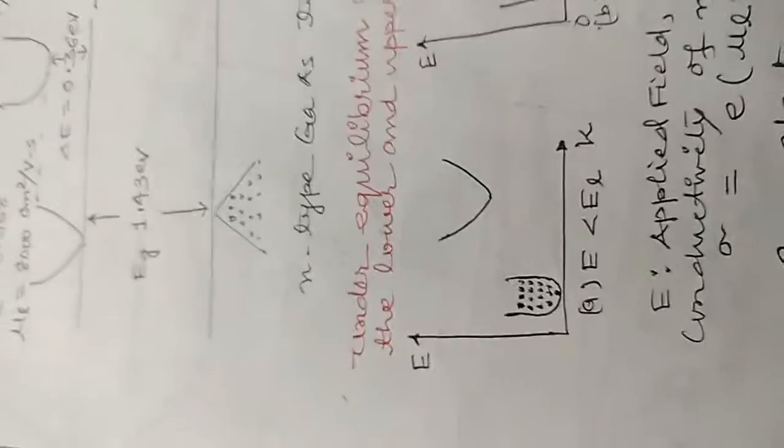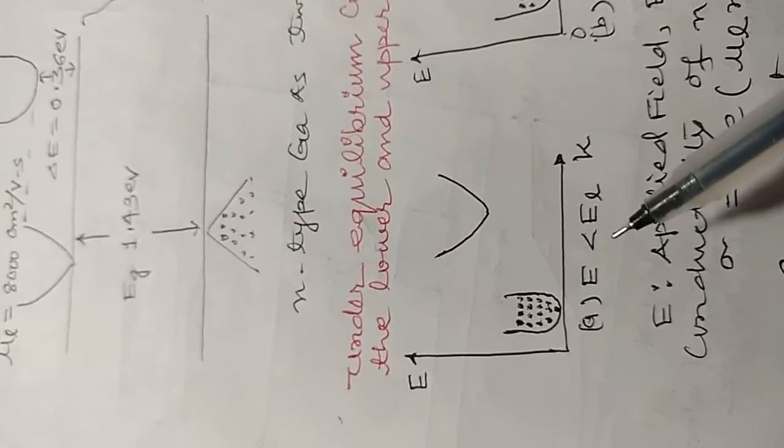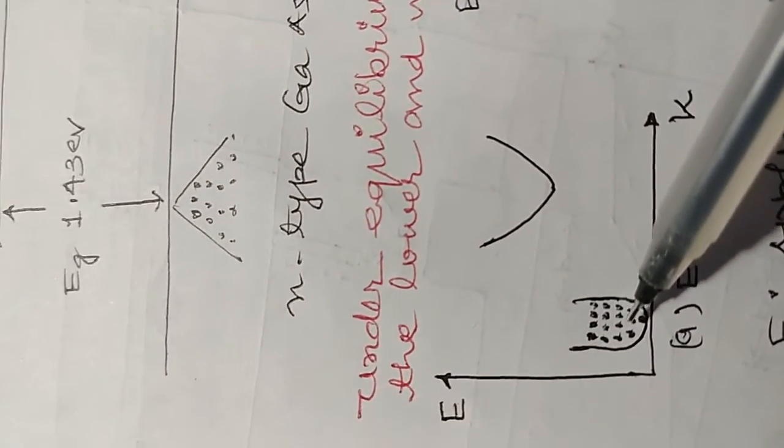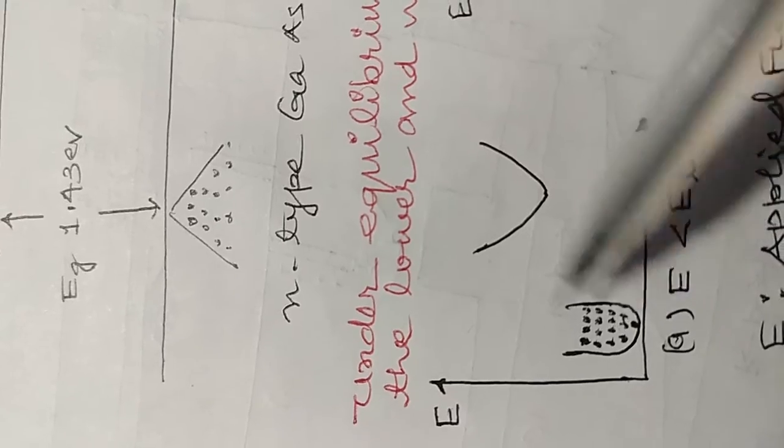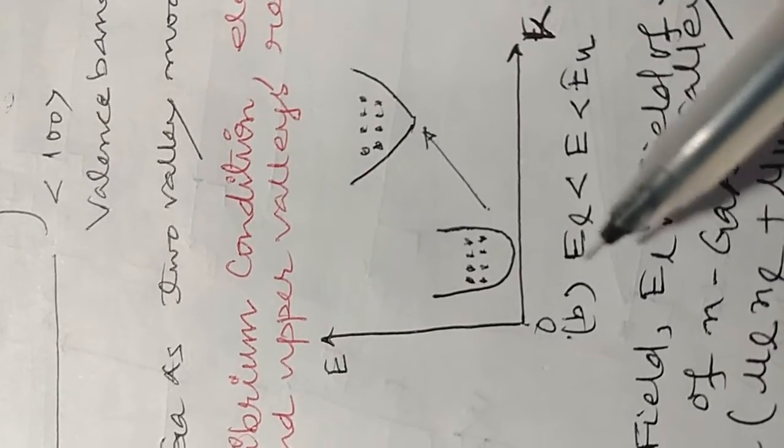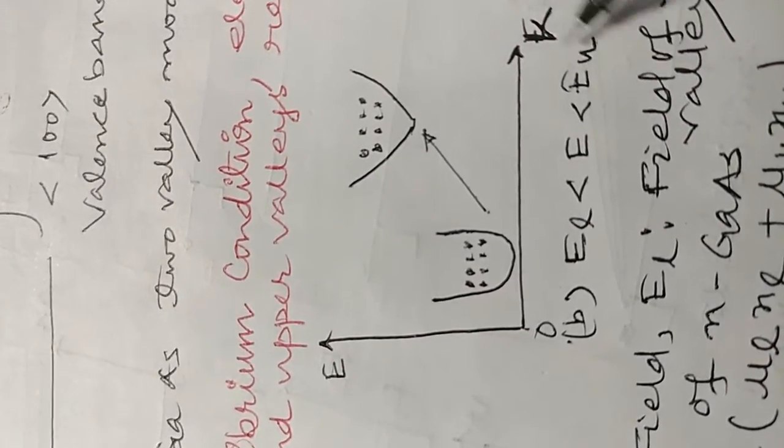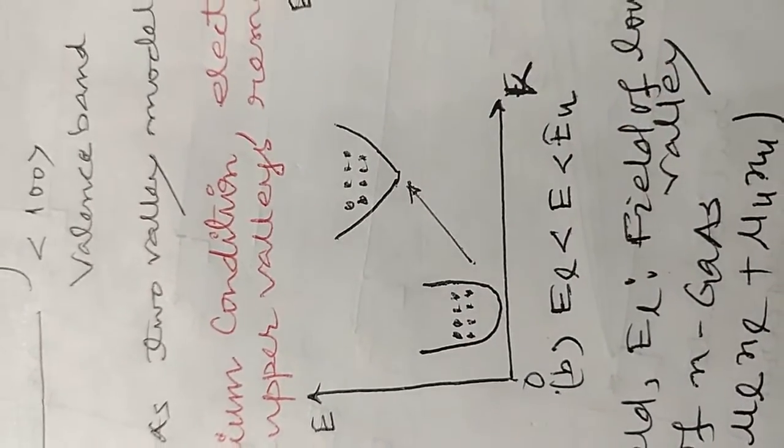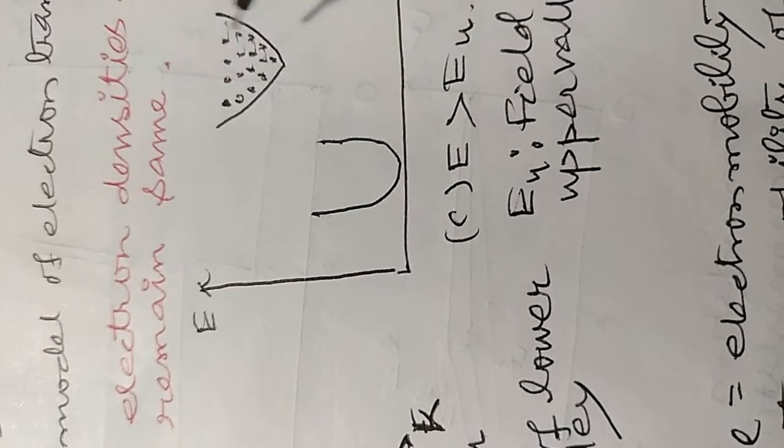When voltage is applied, if the corresponding field is lower than the lower valley field, then the electrons are not transferred. If the applied field is greater than lower valley field and less than upper valley field, then electrons are transferred from lower valley to upper valley. When we apply the field higher than the upper valley field, then all the electrons have transferred here.